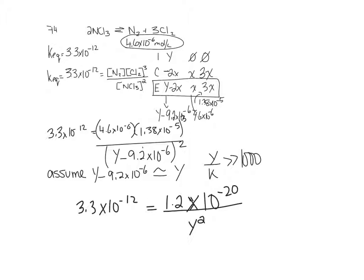So now bring y squared up, take the 3.3 times 10 to the negative 12, take it down, find the square root of both sides and you've got your y. So y squared is equal to 1.2 times 10 to the negative 20 divided by 3.3 times 10 to the negative 12. Take the square root of both sides.